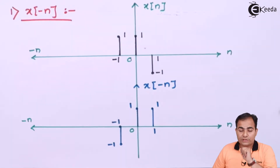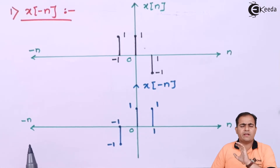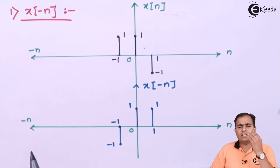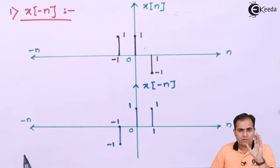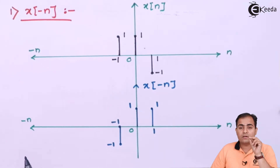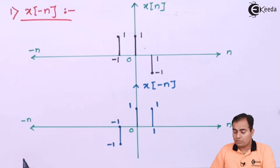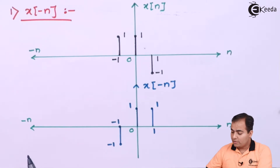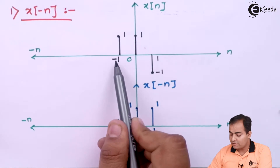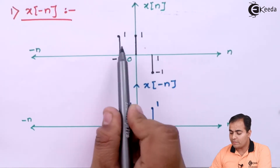The first part of this question is x of minus n. x of minus n means it is simply a mirror image — we multiply minus sign with each and every instant of time to achieve a mirror image. Remember, the amplitude will not get affected. x of n is placed at minus 1, 0, and 1 having amplitudes 1, 1, and minus 1 respectively.